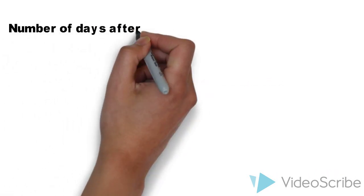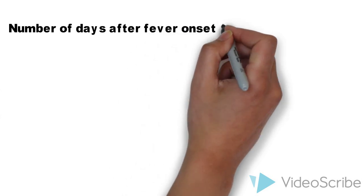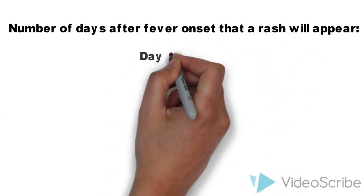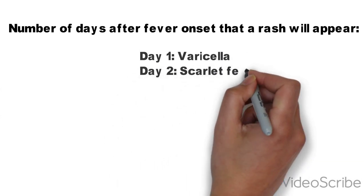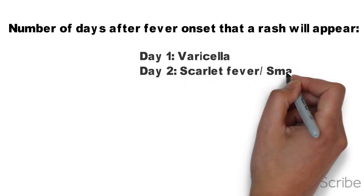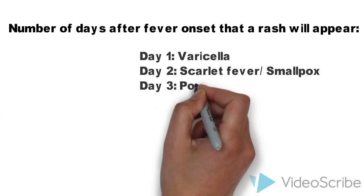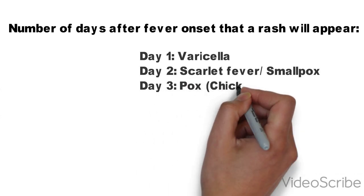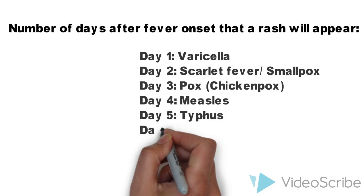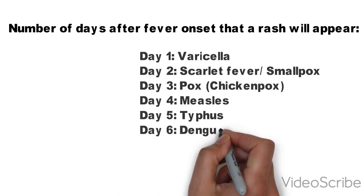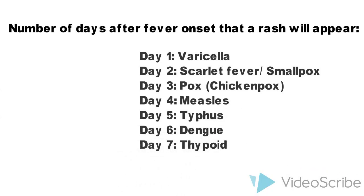The number of days after fever onset that a rash will appear is: day 1 for varicella, day 2 for scarlet fever and smallpox, day 3 for chickenpox, day 4 for measles, day 5 for typhus, day 6 for dengue, and day 7 for typhoid.